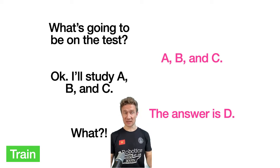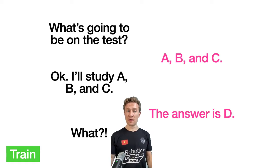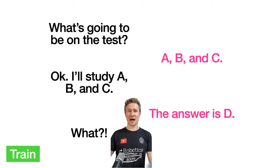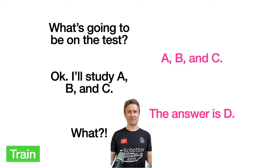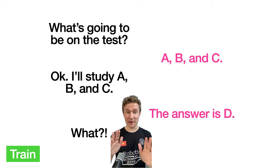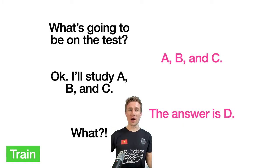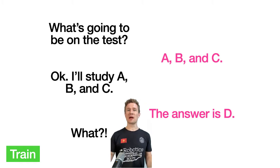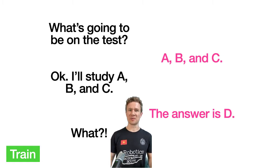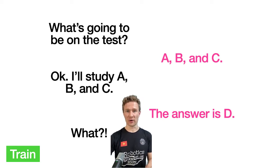Next situation: the student asks what's going to be on the test, the teacher says study A, B, and C. The student does that, and then the teacher throws on topic D. You didn't study topic D — why would you possibly put it on the test? The teacher might say it was kind of important. That's not a good thing to do. When you're teaching somebody something, you should have clear expectations of what you are testing them for, so the information you give at the beginning about what's important relates to what you ultimately test them on.